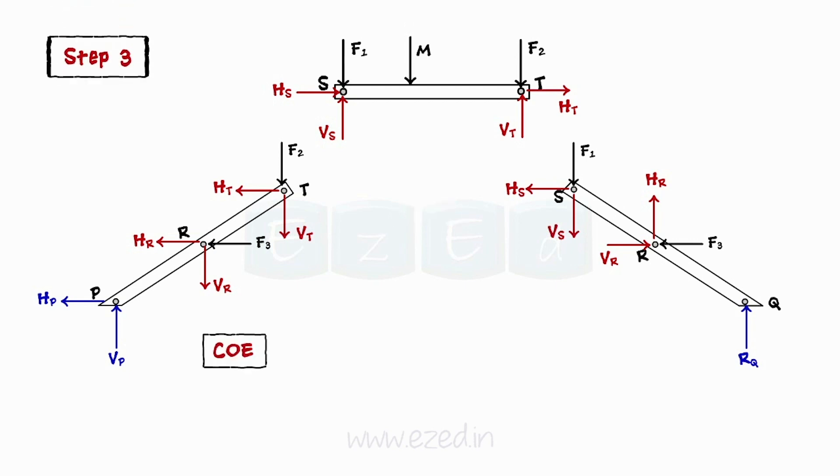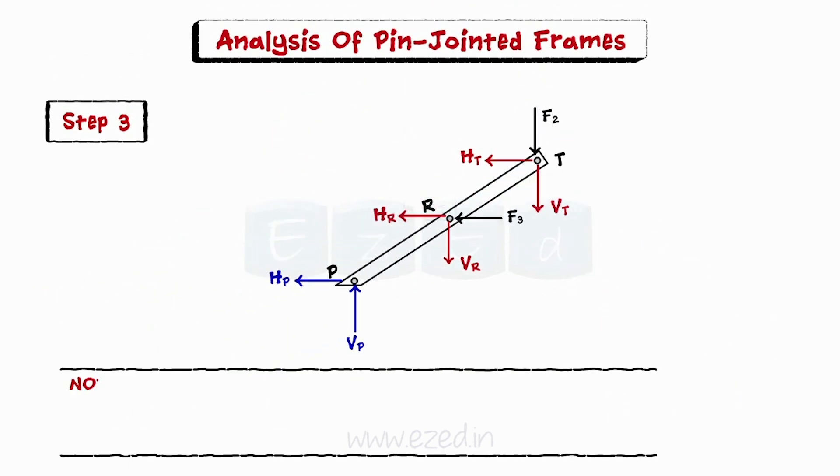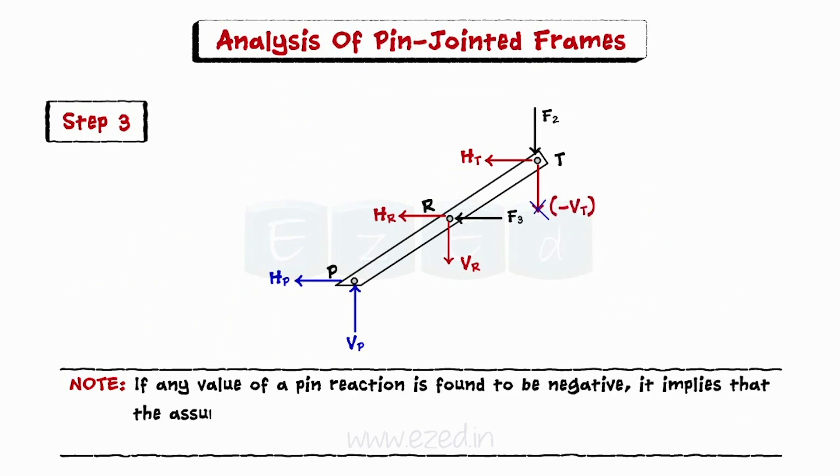Apply conditions of equilibrium to the members separately to calculate pin reactions wherever possible. Kindly note that if any value of a pin reaction is found to be negative, it implies that the assumption was incorrect and the assumed direction of that reaction must be reversed.